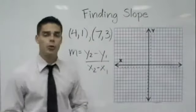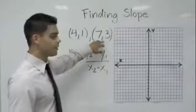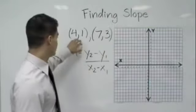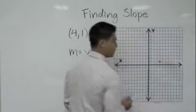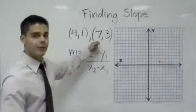Let's learn how to find the slope of two points. I'm going to go ahead and graph these two points that we have here. First one is 4,1 so 4 and 1 would be right there and then my other point is 7,3.